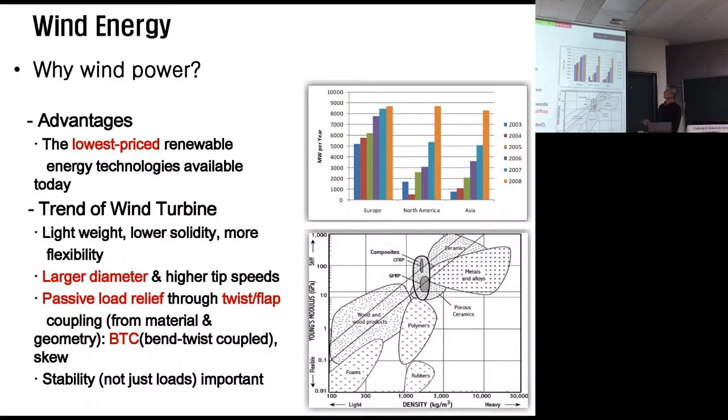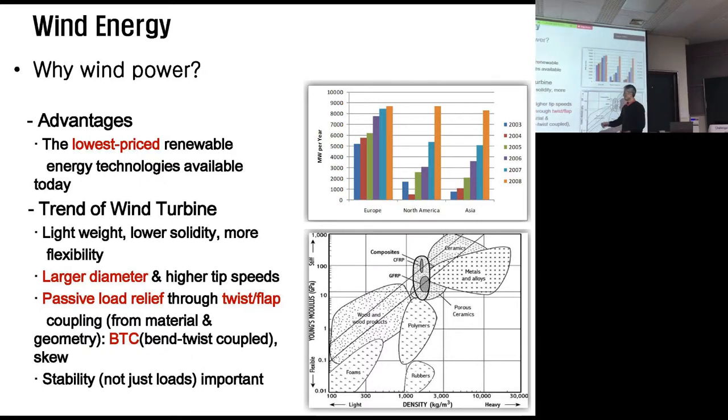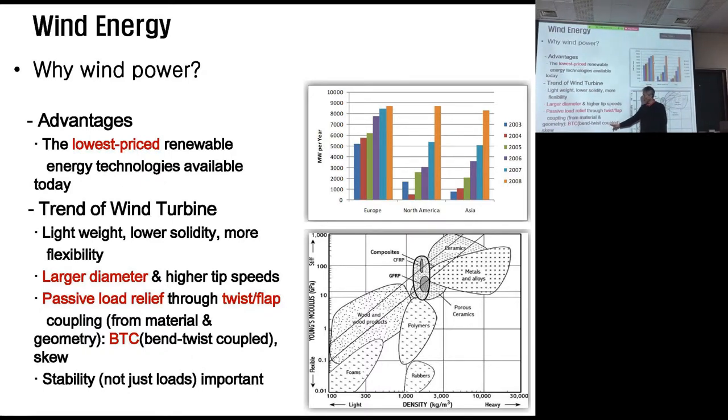Many reasons, but the main reason comes from land consumption and also noise coming from the system. Why wind power? Good things: lowest priced, economically comparing to other sources like solar, wave, and geothermal. Wind is cheaper to convert with today's technology. The trend is lightweight, lower solidity, and more flexibility, so larger diameter.